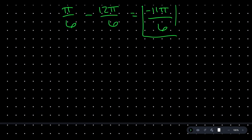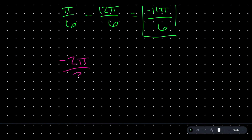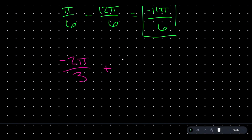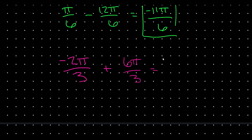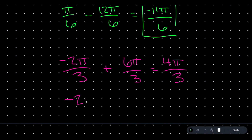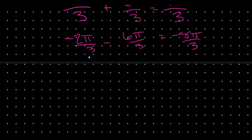Let's try another one. What if we start at negative 2π/3 and want a positive and a negative coterminal value? We can add 2π. With a common denominator, that's 6π/3. Negative 2π/3 plus 6π/3 is positive 4π/3. Then let's also subtract 6π/3 to get negative 8π/3. There's yet another coterminal value.